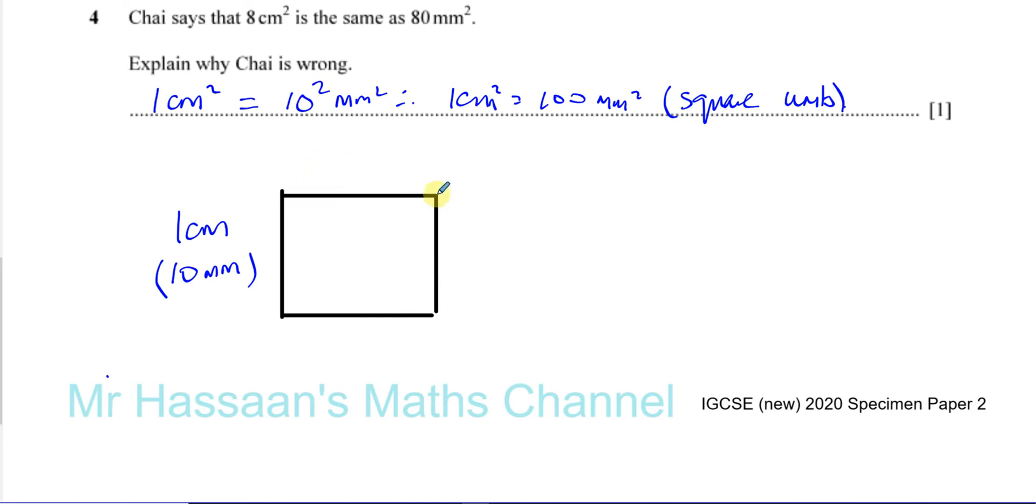Now, this length also is 1 cm, which is equivalent to 10 mm. Now, if I'm going to write down the area of this square in cm², and the area of this very same square in millimeters squared, and in centimeters squared, you multiply 1 by 1, which gives you 1.